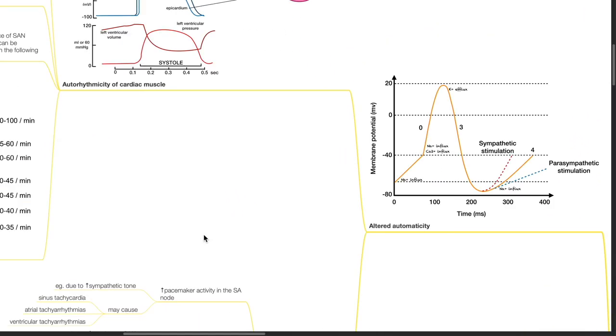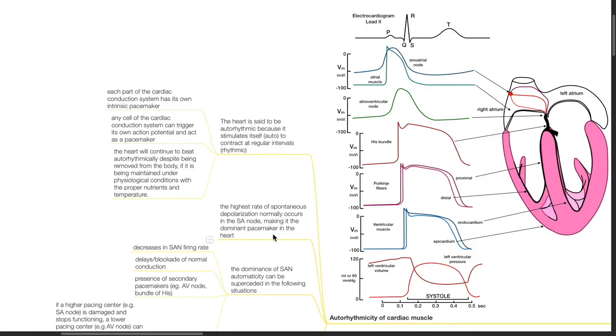Altered automaticity. Autorhythmicity of cardiac muscle. The heart is said to be autorhythmic because it stimulates itself to contract at regular intervals. Each part of the cardiac conduction system has its own intrinsic pacemaker. Any cell of the cardiac conduction system can trigger its own action potential and act as a pacemaker. The heart will continue to beat autorhythmically despite being removed from the body if it is maintained under physiological conditions with the proper nutrients and temperature. The highest rate of spontaneous depolarization normally occurs in the SA node, making it the dominant pacemaker in the heart.